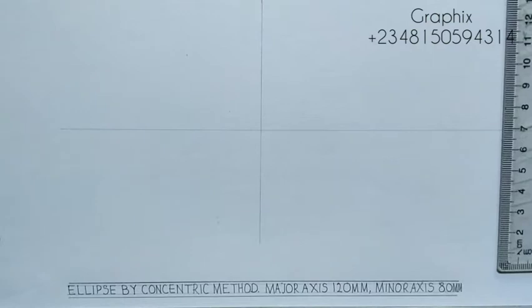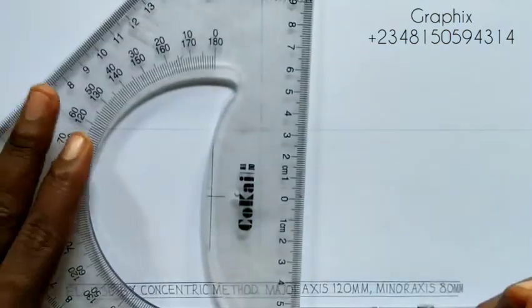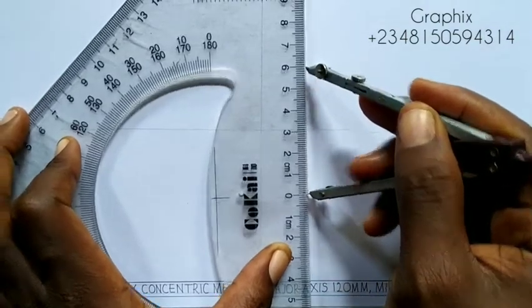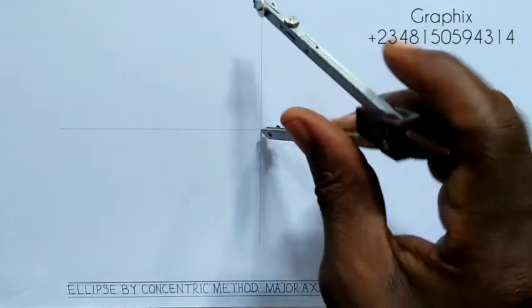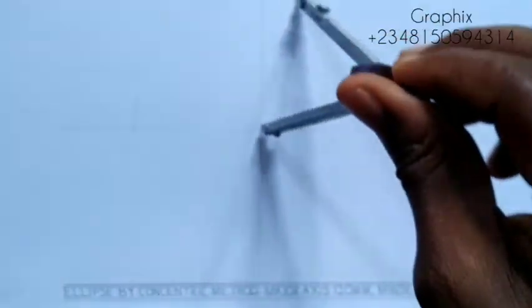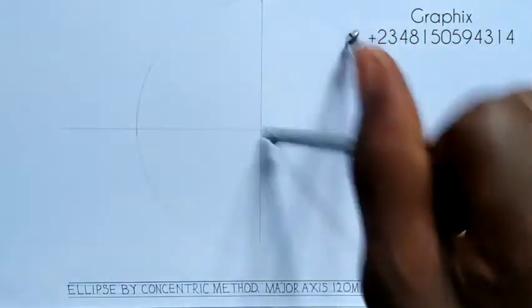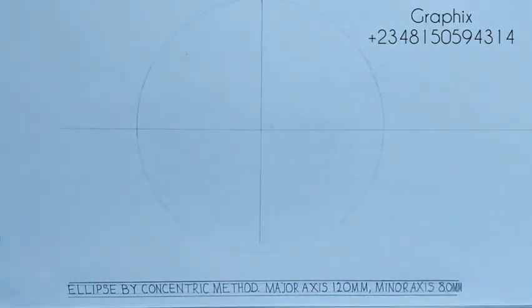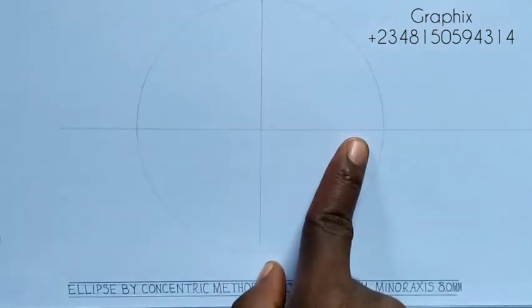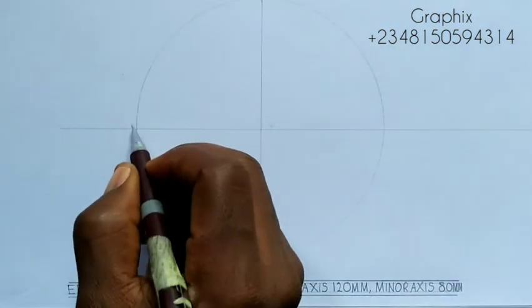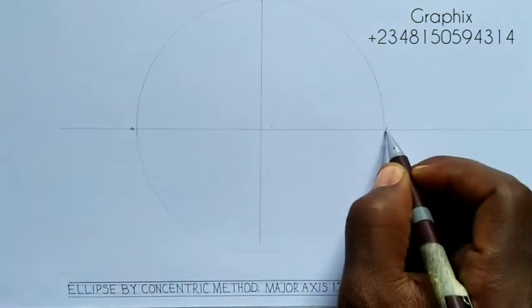With the help of your compass, you are going to measure half of the major axis, which is 60mm. I will place it here and measure 60 with my metal rule. So from here to here is 60. I am going to use it to draw a circle — this is my major circle because it is gotten from my major axis. From here to here is 120. Let me call this point A and this point B.